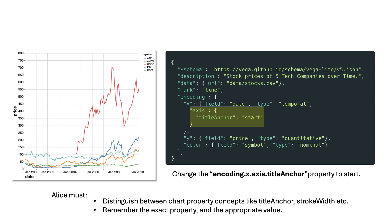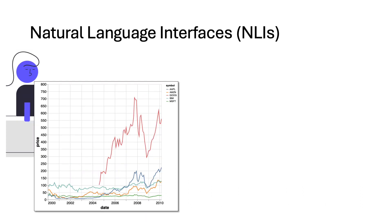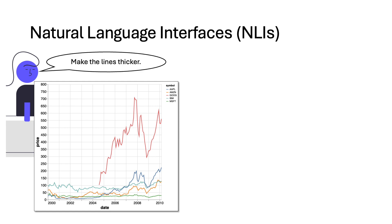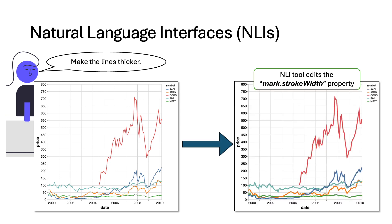To alleviate this, emerging research has given us natural language interfaces. To understand natural language interfaces, let's take another example. Here, Alice wants to edit the chart to make the lines thicker. To do this with the natural language interface, Alice can simply give the command in natural language — 'make the lines thicker' — and the tool will automatically edit the appropriate property.